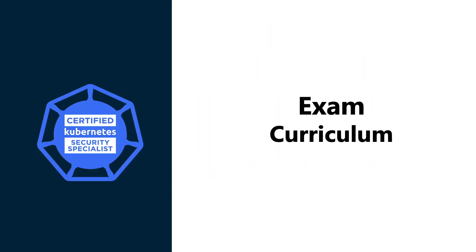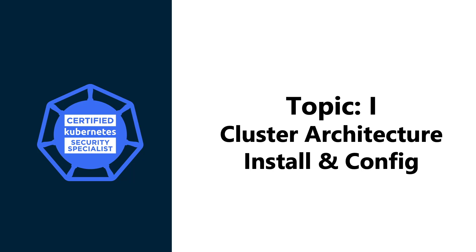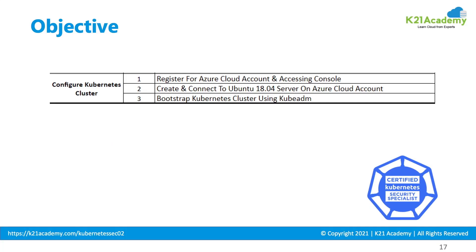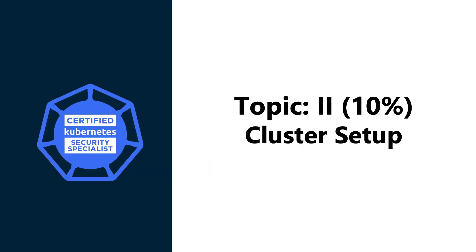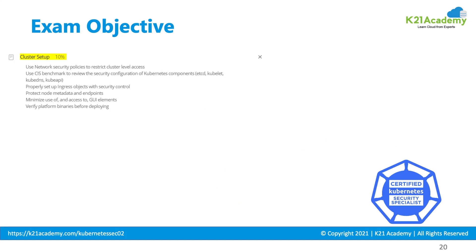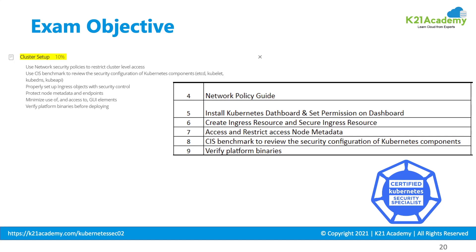Now let's see the curriculum topic-wise. Topic 1: Cluster Architecture, Installation, and Configuration. Configuring a Kubernetes cluster involves the basics to get started with the Kubernetes setup. We have mapped everything with activity guides so you can gain in-depth knowledge through hands-on exercises. Topic 2: Cluster Setup, weighed at 10%, includes network security policies, reviewing security of components like kubelet, kube-dns, and kube-proxy, as well as verifying platform binaries.